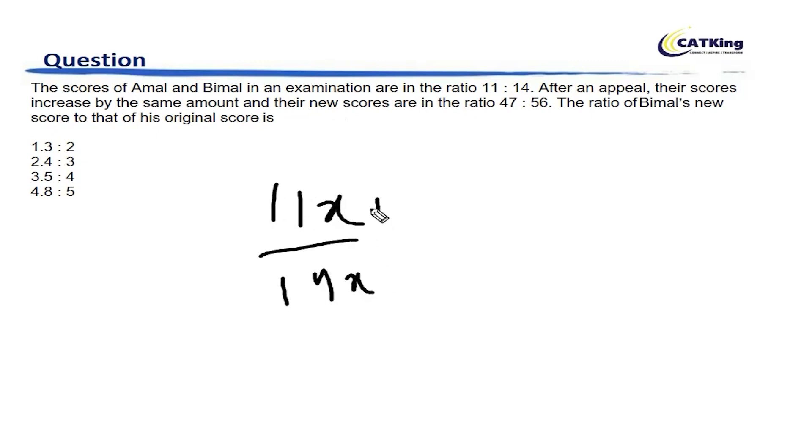After the appeal, some amount is added. They increase by the same amount and the ratio becomes 47 upon 56.